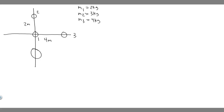In this problem, we're told a coordinate system in meters is constructed on the surface of a pool table, and three objects are placed on the table as follows: a 2-kilogram object at the origin, a 3-kilogram object at (0, 2), and a 4-kilogram object at (4, 0). Find the resultant gravitational force exerted by the other two objects on the object at the origin.